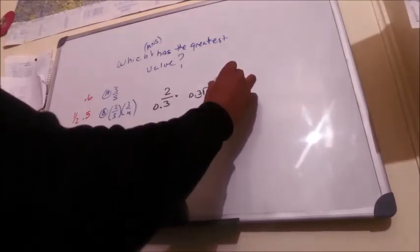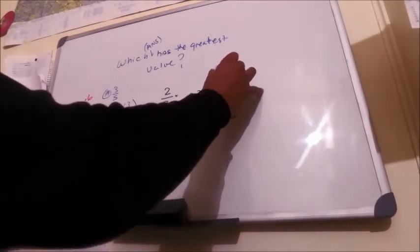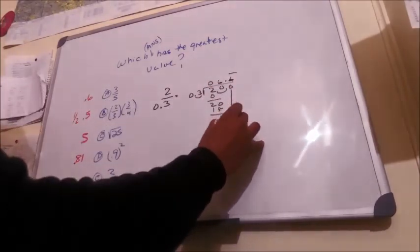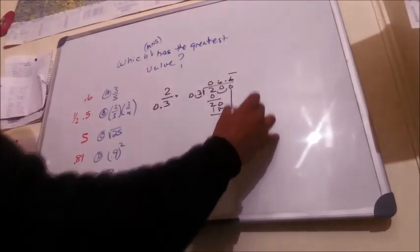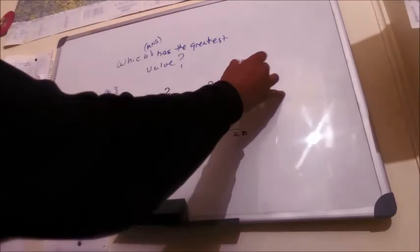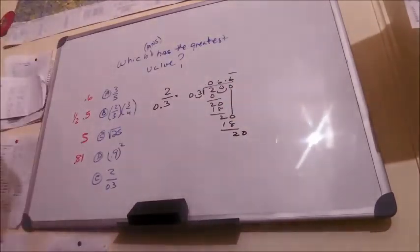3 goes into 2 how many times? Zero. 3 goes into 20 six times—18, 2 remaining. Another zero comes down, 20, and this is just going to keep doing the same thing.